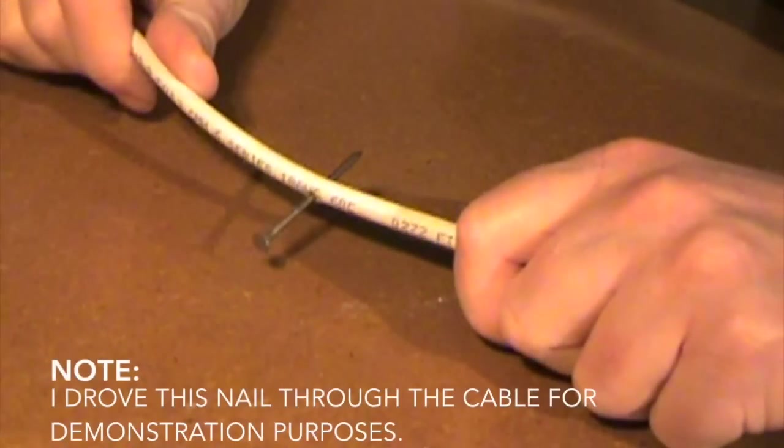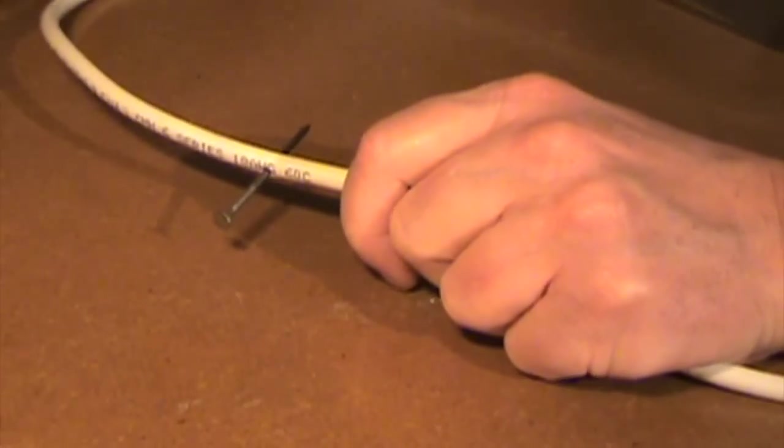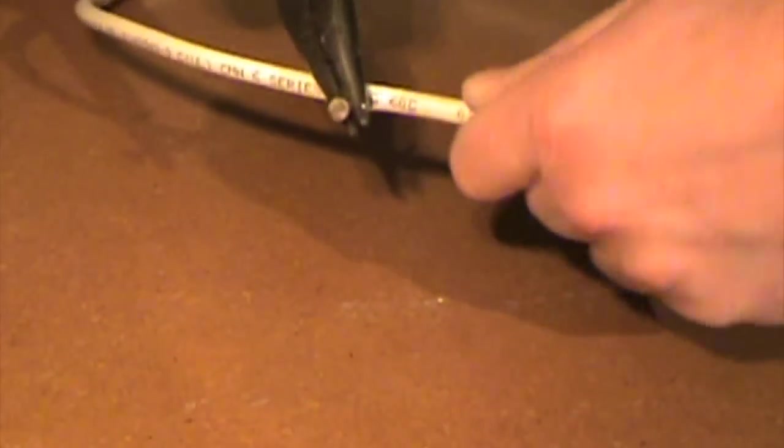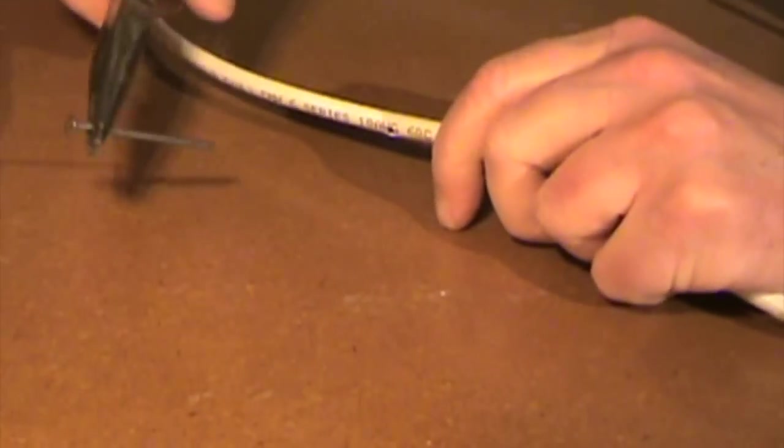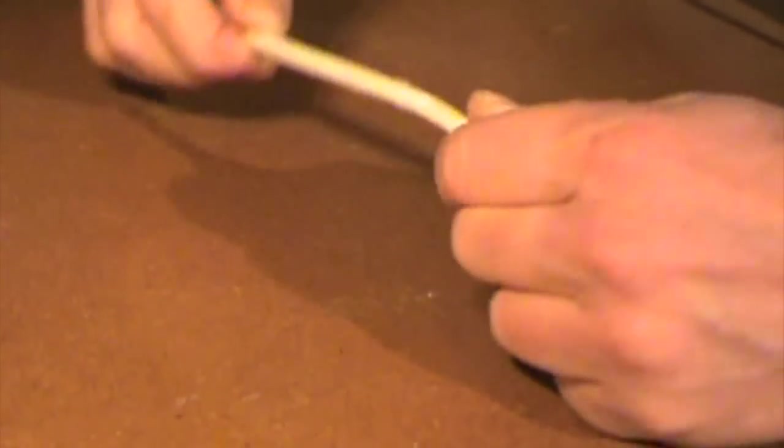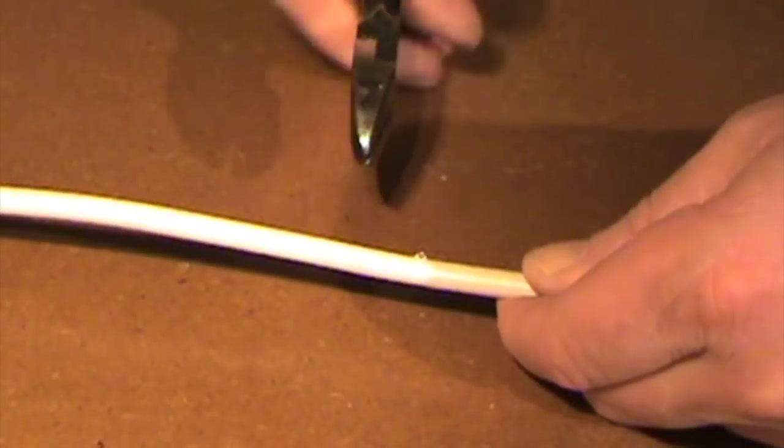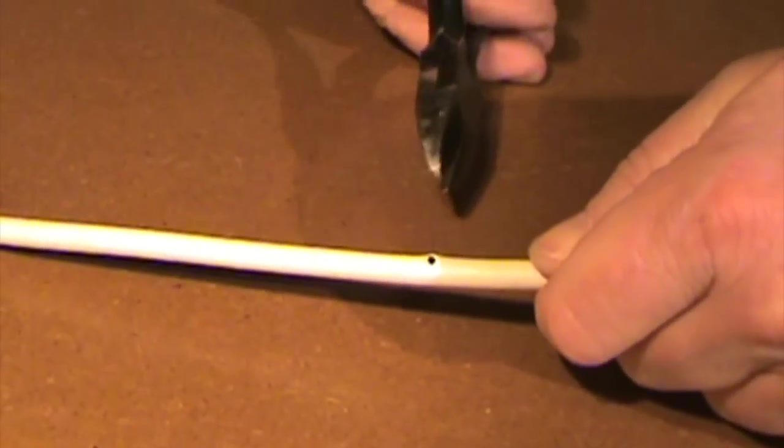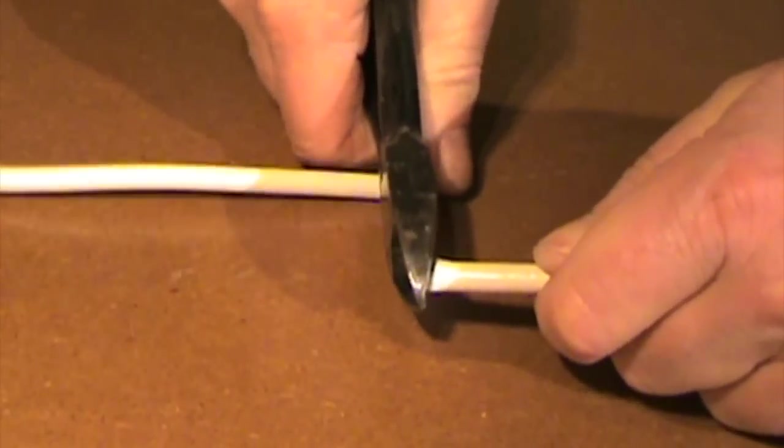Of course, no one actually drives a nail through the cable on purpose, but if it ever happens, just pull the nail out and you'll find that the center conductor may not have been cut, but you can't take a chance. Just using pliers, cut it right down the middle where the hole is.